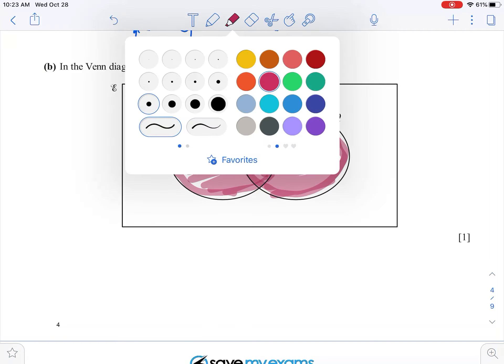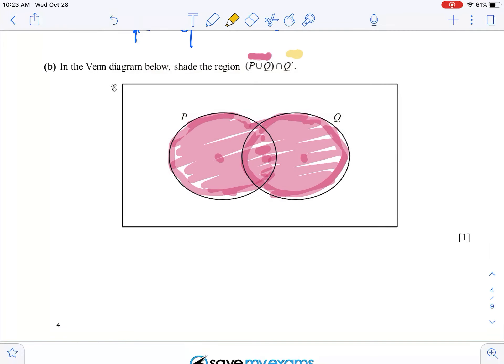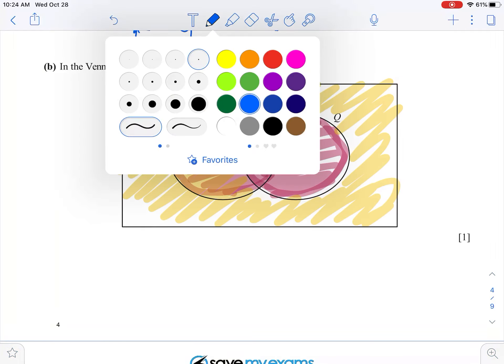Now we want the region where that intersects with not Q. Well, not Q is, let's colour in not Q. It's everything outside of that Q circle. OK. So where does the yellow intersect as well as with the pink? Well, that is just, let's take a green, that is just here where I've coloured both.